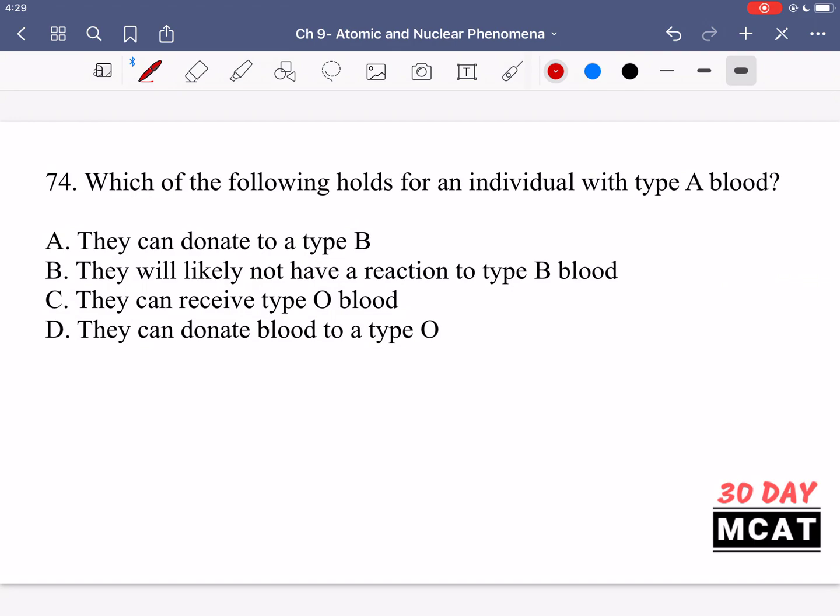In question 74, we're asked which of the following holds for an individual with type A blood? So which holds, meaning what is true for someone with type A blood? So type A blood means that this person, their blood cells have the A antigen, which means that they cannot, their blood cannot be donated to someone that's type B or someone that's type AB.